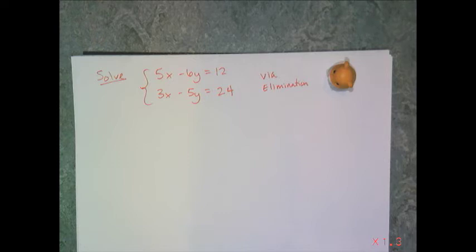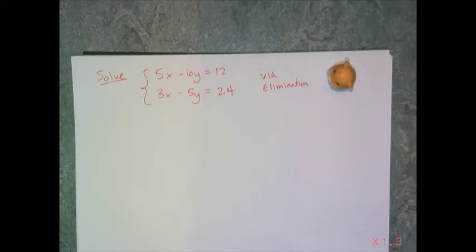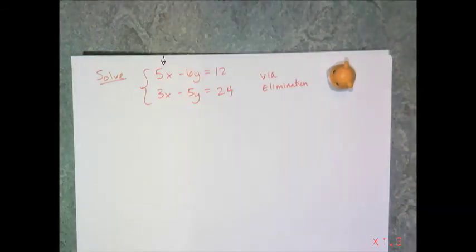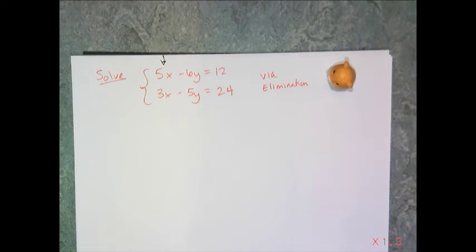If I just add these two equations, nothing goes away. I get 8x minus 11y equals 36 — still two variables, which is not good. So what I have to do is use multiplication to change the coefficients so that when I add, a variable does go away. I just have to pick whichever variable I want. I'm going to pick x. One coefficient of x is 5 and the other is 3. So I'm going to multiply both equations to make the coefficients opposites of each other.